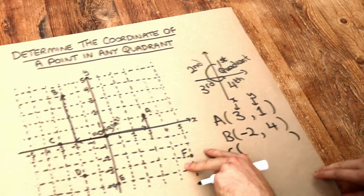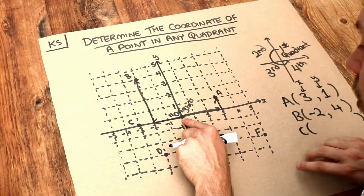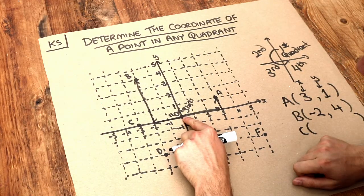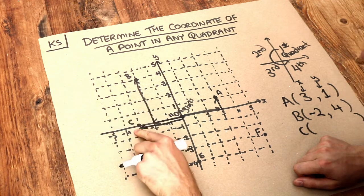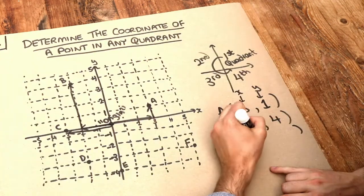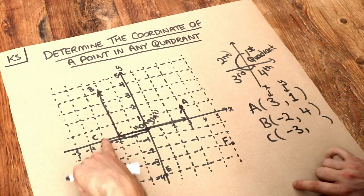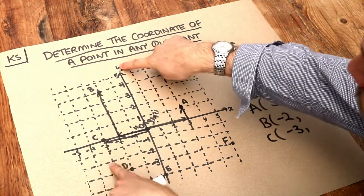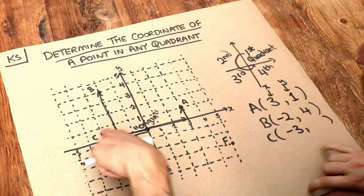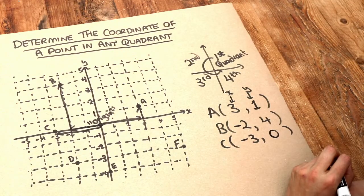What about C? How far from the origin do we have to go in the x-direction? Well, we have to go minus three in the x-direction to get to C. But notice we don't have to go up or down in this y-direction here, so the y-value is going to be zero.